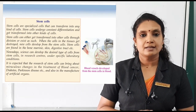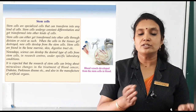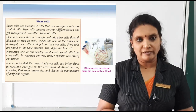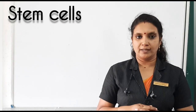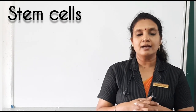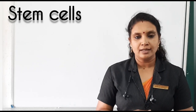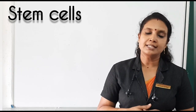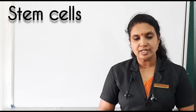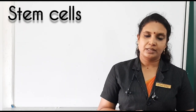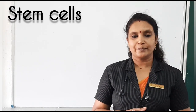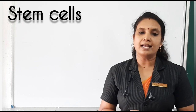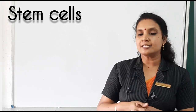Either it can change into another type of cell, or it will exist as such in our body. The stem cells are found in body parts like bone marrow, digestive tract, and skin. And there are two types of stem cells: embryonic stem cells and adult stem cells, also called somatic stem cells.